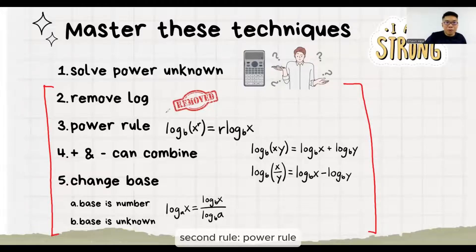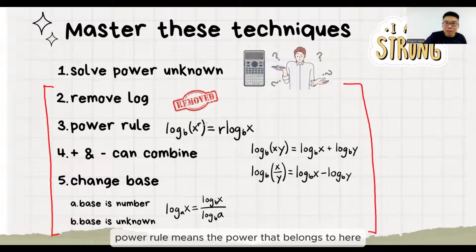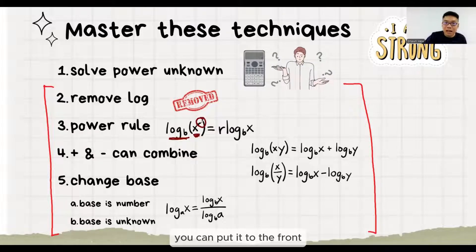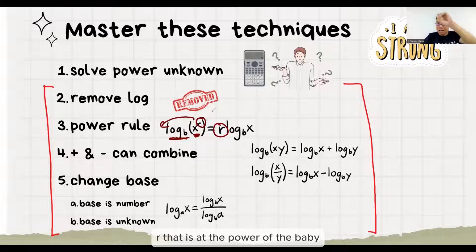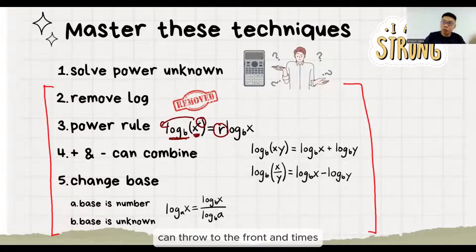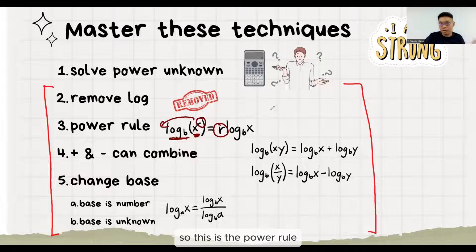The second rule is the power rule. Power rule means the power that belongs to the baby can be put to the front. R that is at the power of the baby can move to the front and multiply. So this is the power rule.